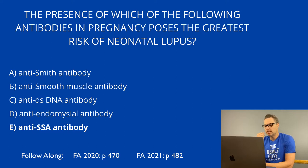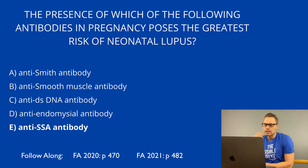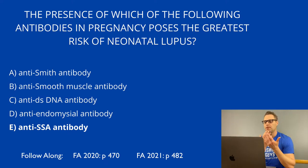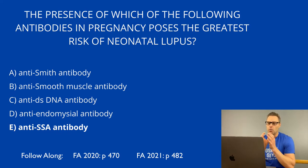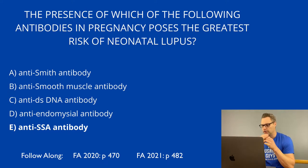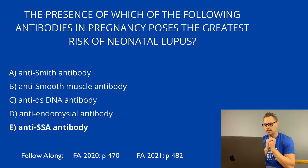Now let's look at some of the specific issues we need to know when it comes to SLE, starting with the heart. The main concern is the development of a type of endocarditis known as Liebman-Sachs endocarditis, whereby thrombi develop on the mitral or the aortic valve, most likely on the undersurface. These are non-bacterial in nature.